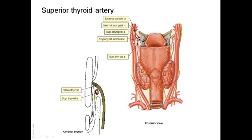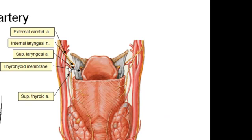Looking at the superior thyroid artery from a posterior view, at its beginning it supplies a small branch that passes through the thyrohyoid membrane, which extends between the thyroid cartilage and the hyoid bone. This branch is called the superior laryngeal artery, and it is accompanied by the internal laryngeal nerve, which is sensory to the upper part of the larynx above the vocal folds.